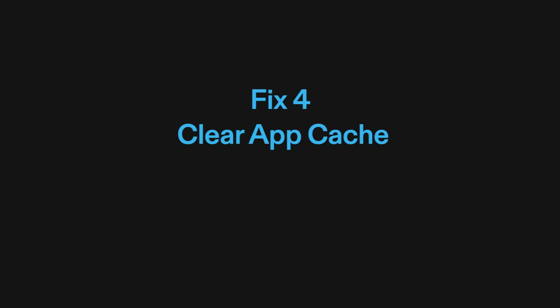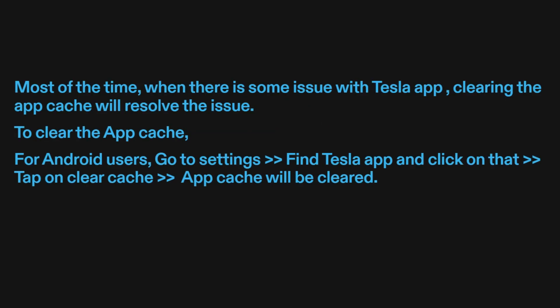Fix four: clear app cache. Most of the time, when there is some issue with the Tesla app, clearing the app cache will resolve the issue. To clear the app cache for Android users, go to Settings, find the Tesla app and click on it, then tap on Clear Cache.